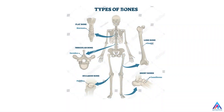What are the types of bones in our body? There are flat bones which are found in the sternum, irregular bones which are found in the vertebra, and sesamoid bones which are found on the patella on the knee.